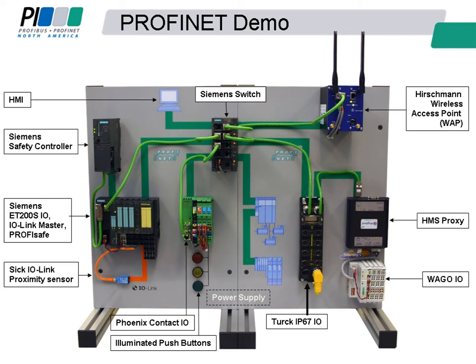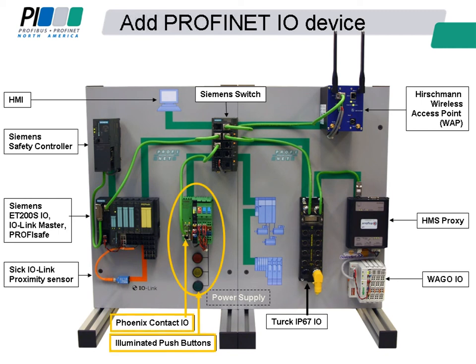Shown is a picture of our demonstration rack with the I.O. controller and I.O. devices. We will be setting up the highlighted I.O. device and then turn on the lights as an output from our controller program.